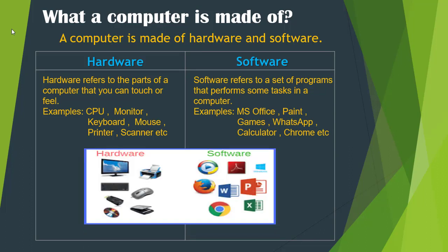Students, you can see different types of hardware and software in the picture given on your slide. Hardware includes Monitor, Printer, Keyboard, Mouse, RAM, Scanner, CD, Hard Disk — everything which is outside the computer that you can touch and feel is called hardware. And software performs some task when you are using it. I hope you are clear about what a computer is made up of — a computer is made of hardware and software.